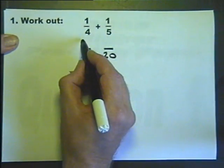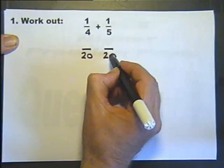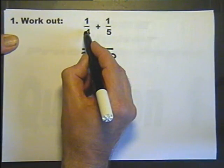One quarter is the same as something 20ths. One fifth is the same as something 20ths. We look at the bottom number.